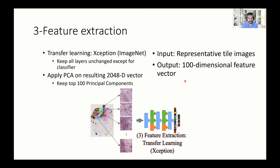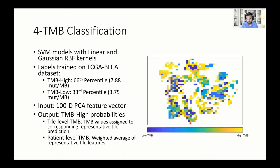Then we perform feature extraction using transfer learning with an Xception model trained on ImageNet, keeping all layers except the softmax classifier. This yields a 2048-dimensional vector on which we apply principal component analysis and keep the top 100 principal components. The input is each individual tile image for each slide, and we receive a 100-dimensional feature vector.